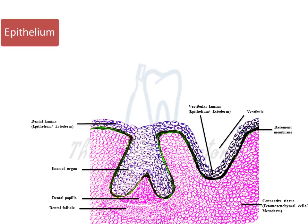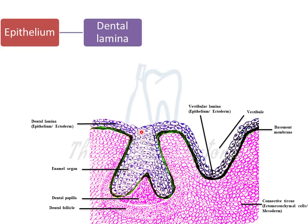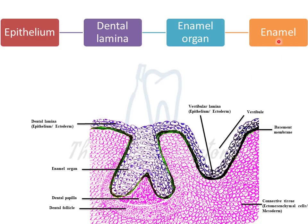To clarify which structures form from which parts: the epithelium provided an ingrowth forming the dental lamina, which grew inside to help form the enamel organ. The enamel organ helps in the formation of enamel. So we can say that enamel is epithelial in origin.